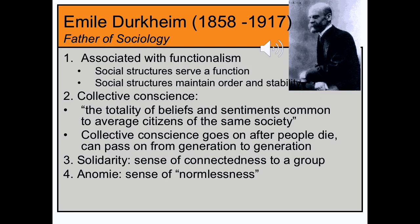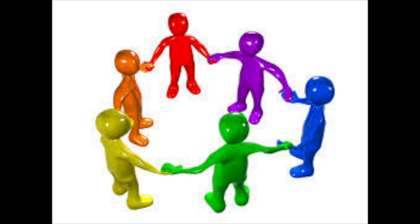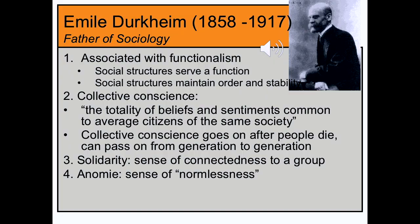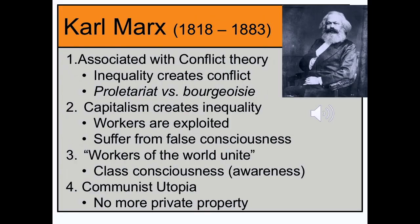Collective conscience passes from generation to generation. People enter society, they are shaped by society, and when they leave, society goes on. He also talks about solidarity — that people have a connectedness to a group. The tighter the group, the more solidarity exists, the more common bonds and cohesion. When people are disconnected from a group or there is a loose group structure, people can suffer from anomie, which is a sense of normlessness. We'll talk more about each of these ideas in the following slides.